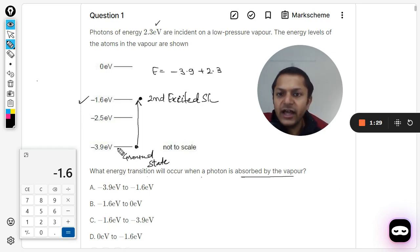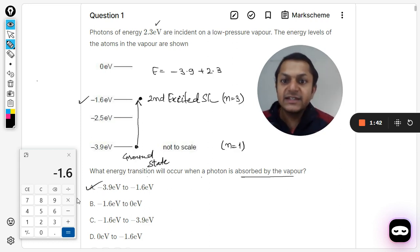Or you can say it is n equals 1, 2, 3, or n equals 3. So it is moving from n equals 1 to n equals 3. From the answers we can say 3.9 to this. So clearly A will be the correct answer, and this is how we do it.